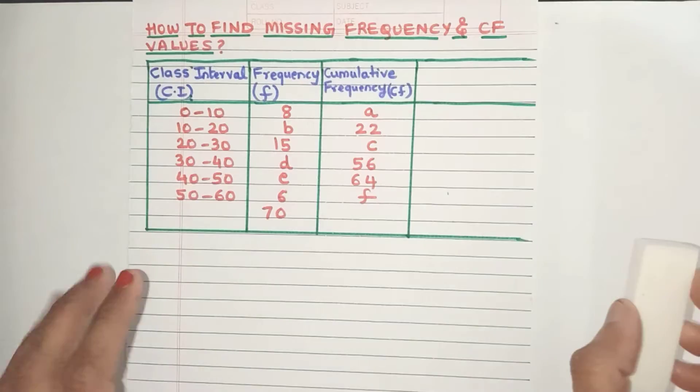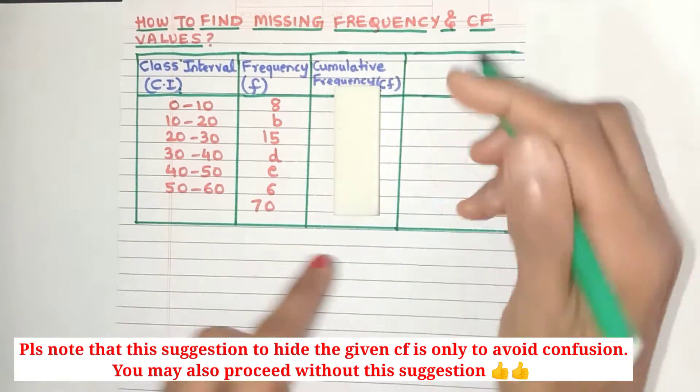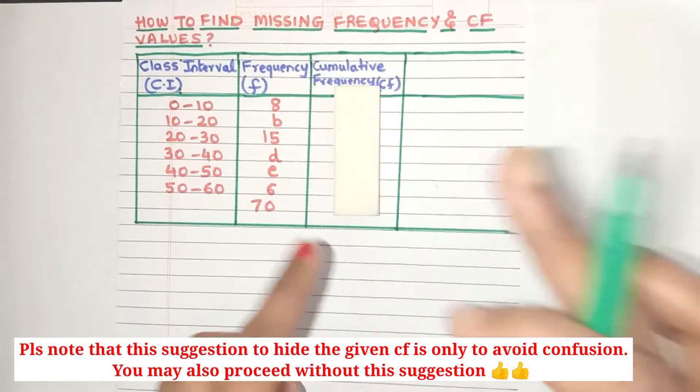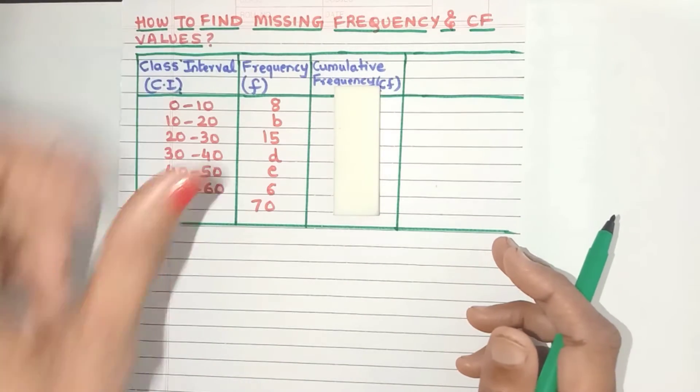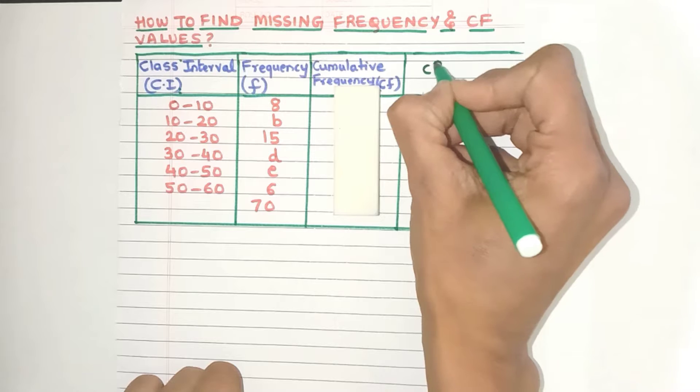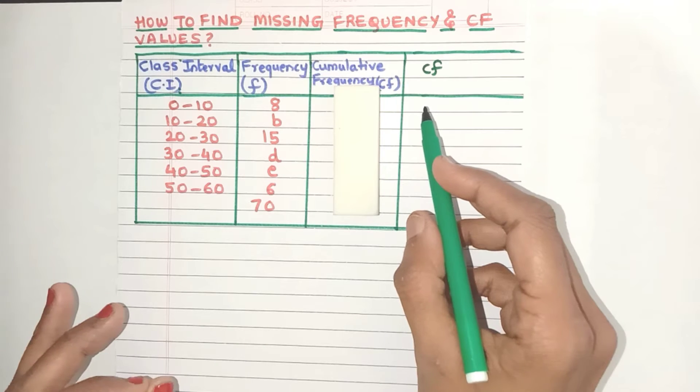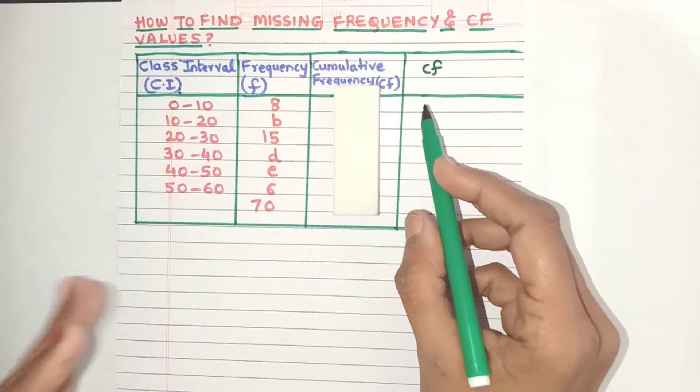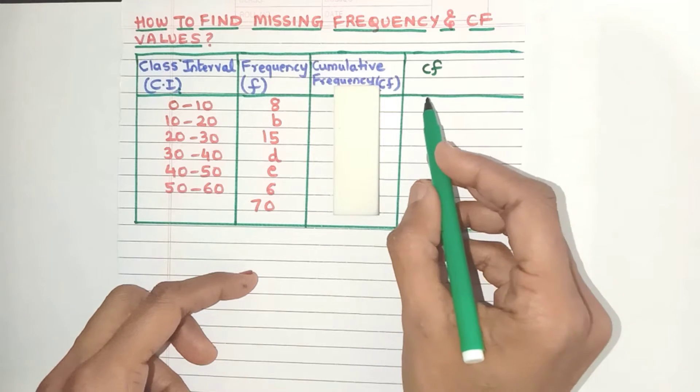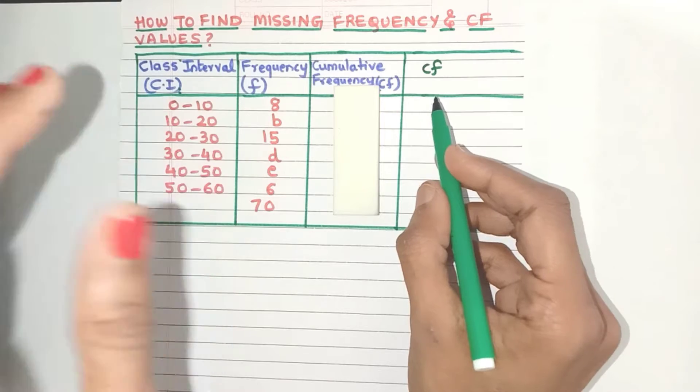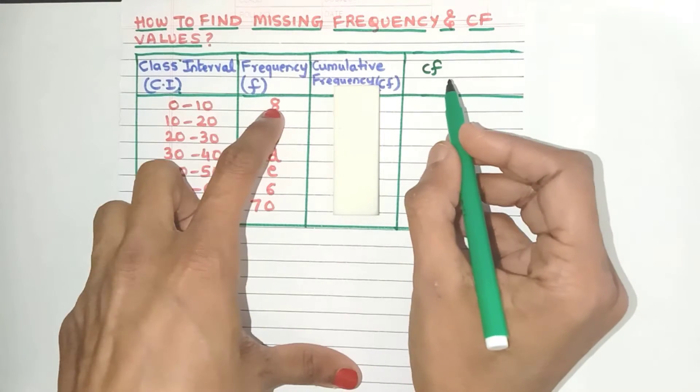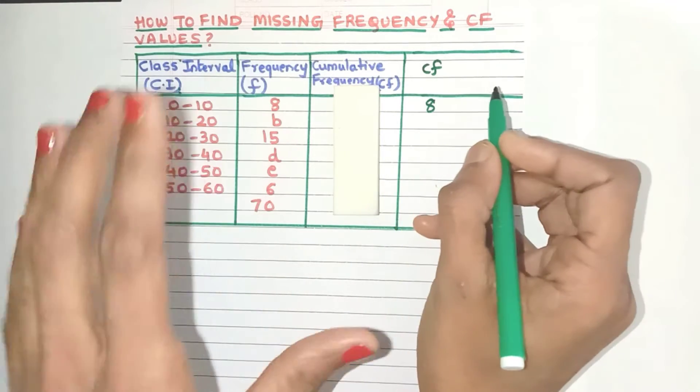Friends, the first step is for the time being just ignore this CF column that they have given here. Let's create our own cumulative frequency column using the frequency values. Now what is cumulative frequency? Yes, it is nothing but added frequency. So the CF for the first class interval will always be the frequency of the class interval. So here the frequency is 8, so the CF will also be 8.